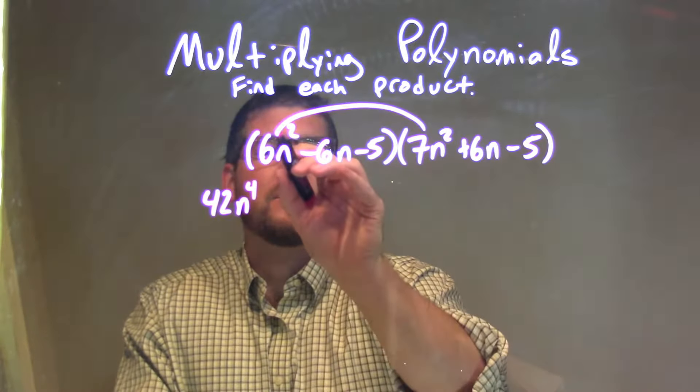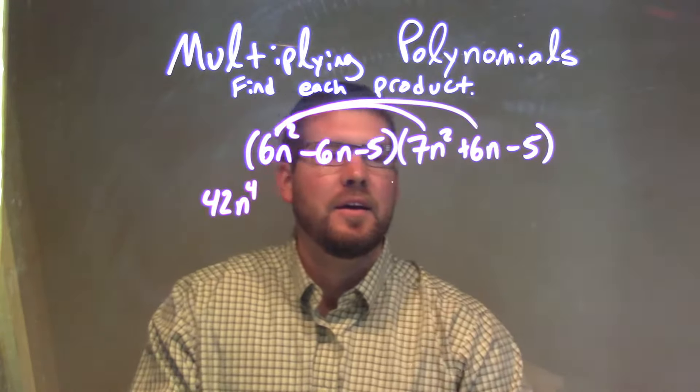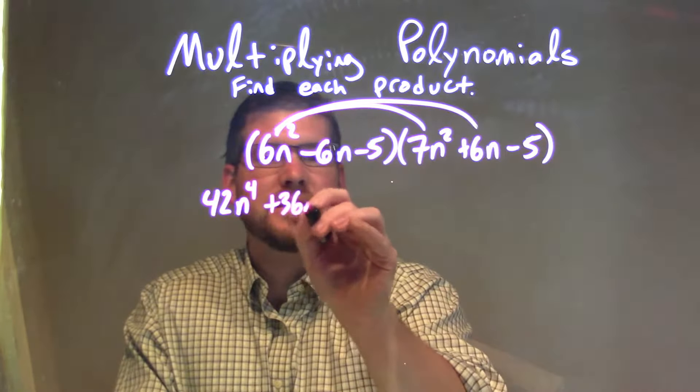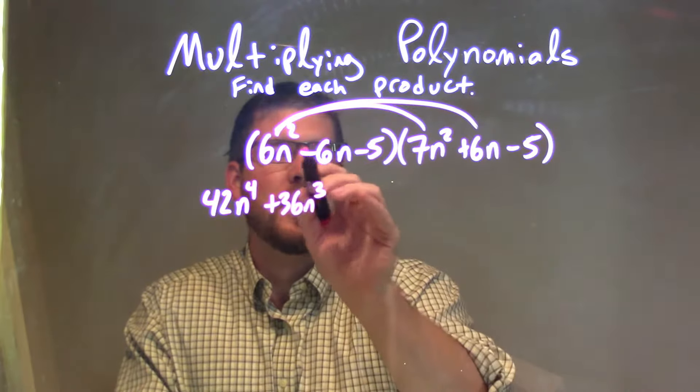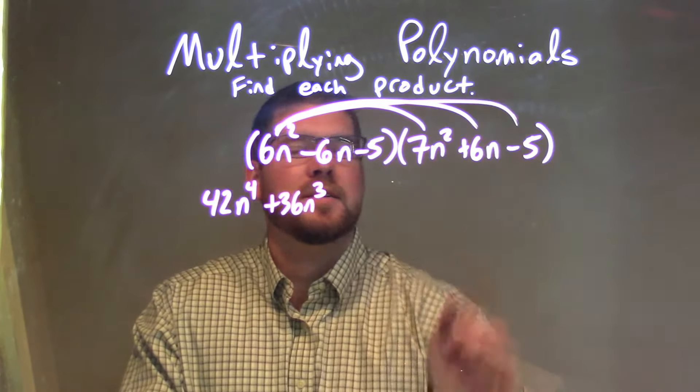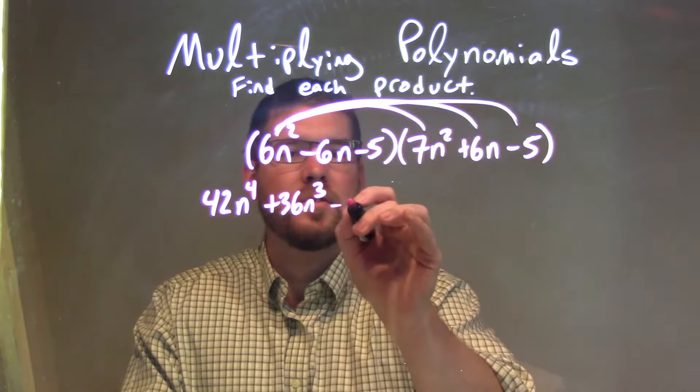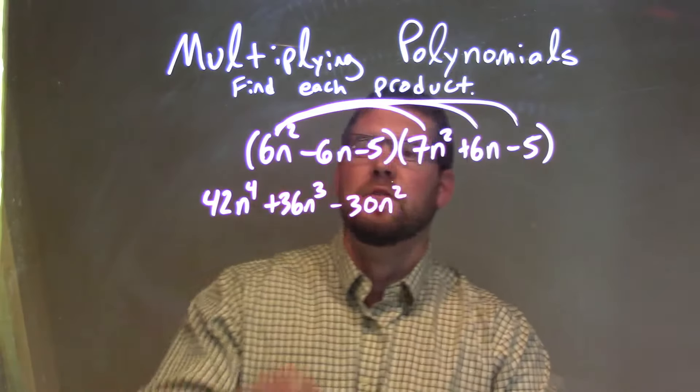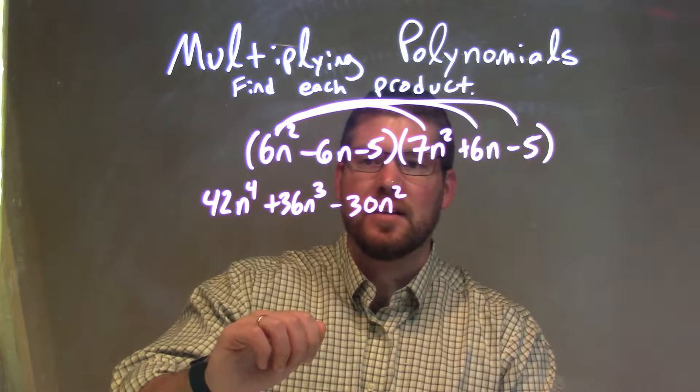Now 6n squared times 6n is a positive 36n to the third power. Now 6n squared times a minus 5 is a minus 30n squared. So now I've done everything with the 6n squared.